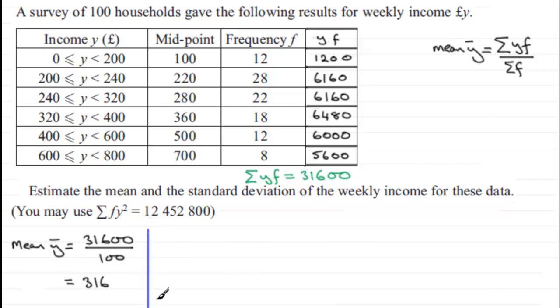Next we've got to find the standard deviation. The standard deviation for a grouped frequency table is given by this formula. It's the square root of the sum of Y squared times F, the frequency, all divided by Sigma F, the total frequency, minus the mean squared.